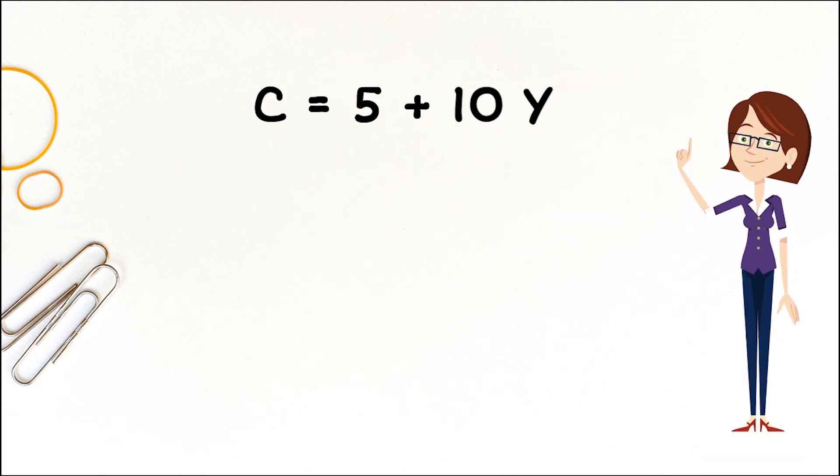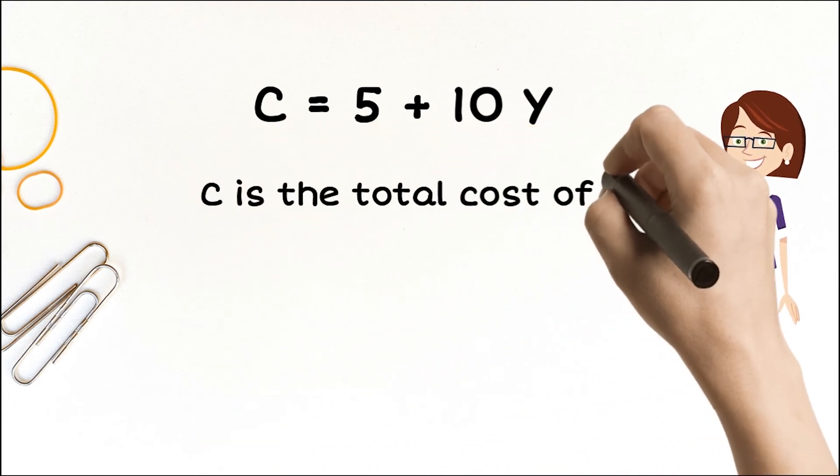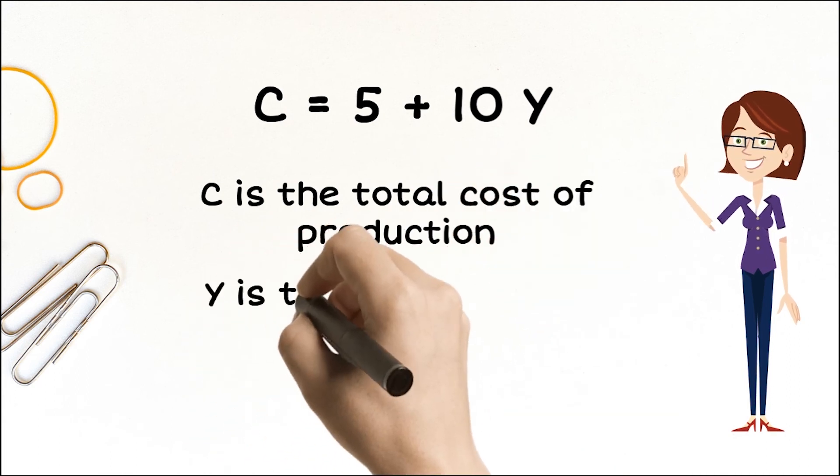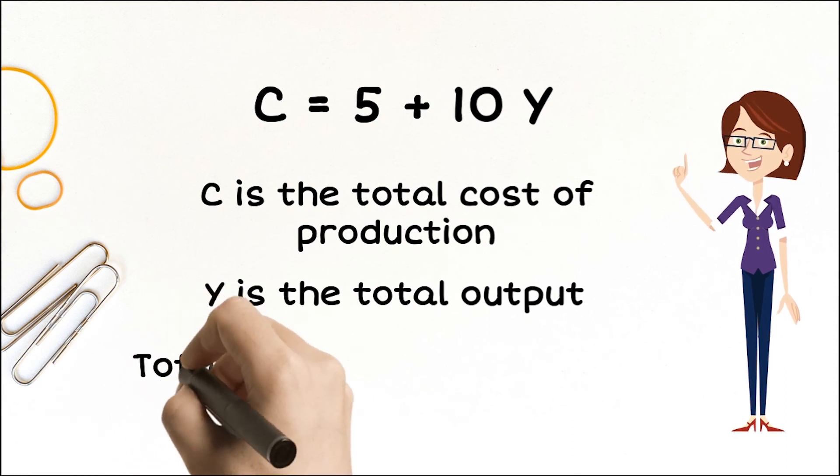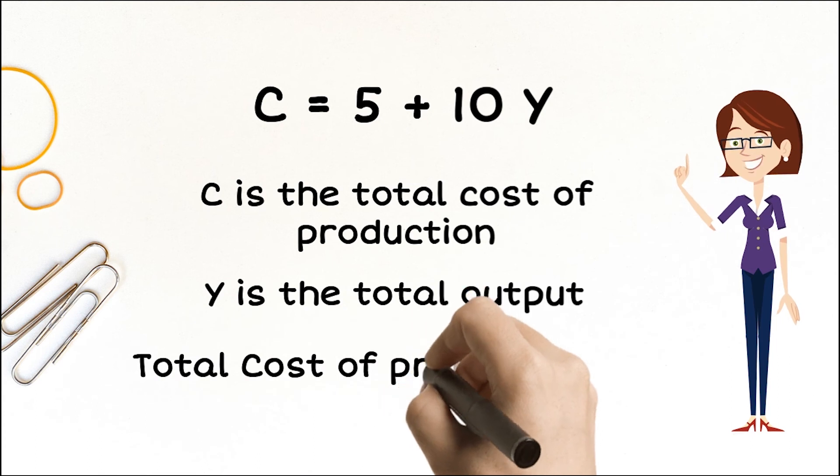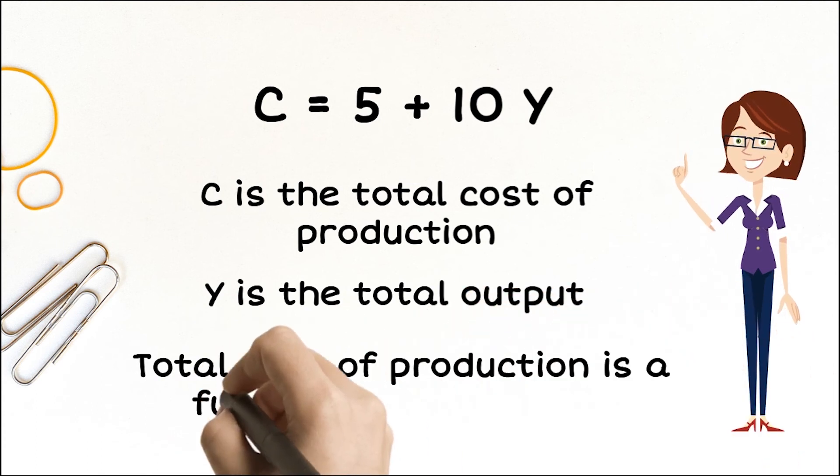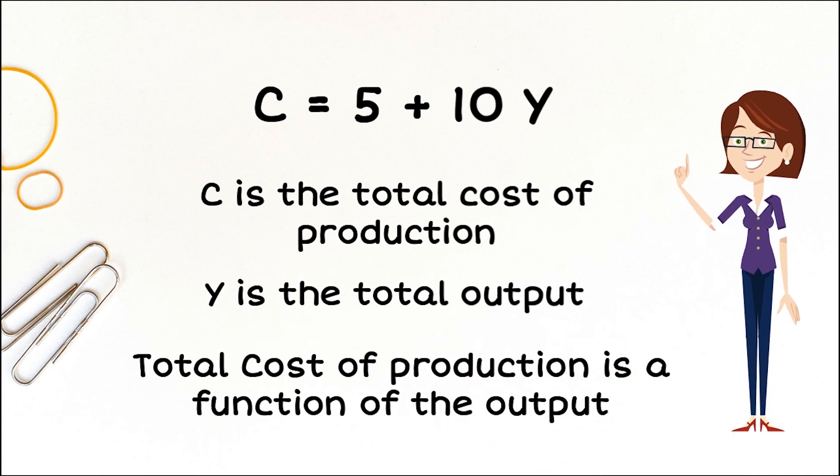where C is the total cost and is dependent, and Y is the total output and is independent. Since for every single value of Y there is a unique value for C, the total cost of production may be considered as a function of the total output.